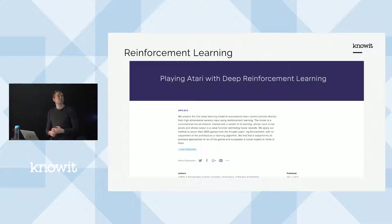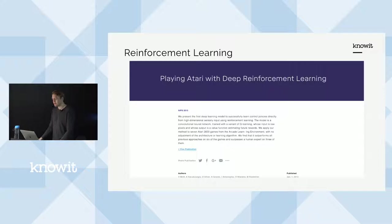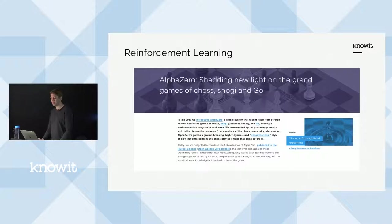In the last years, reinforcement learning has really become more and more hyped because of the results it has achieved — such as this one from 2013, which is DeepMind who made an agent that plays Atari games and performed with superhuman performance on several games. They also made AlphaZero, which plays chess, Shogi, and Go, and also beat the world's best players in those games.